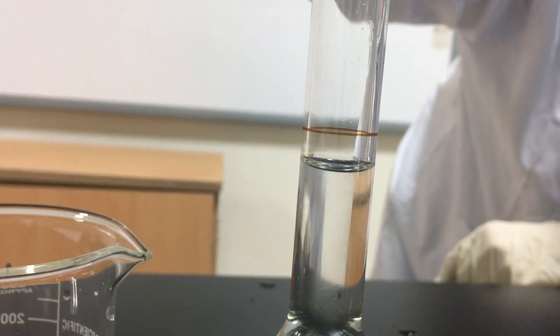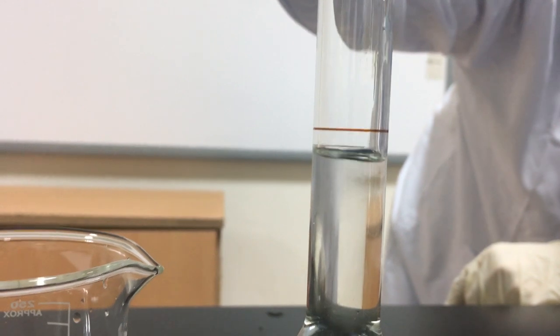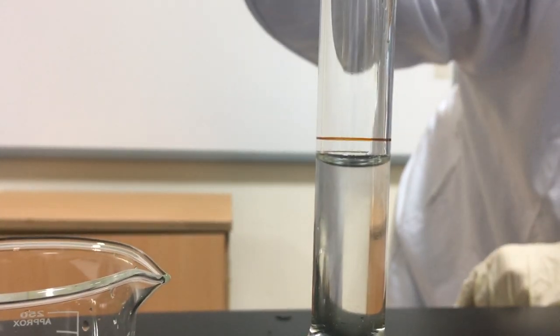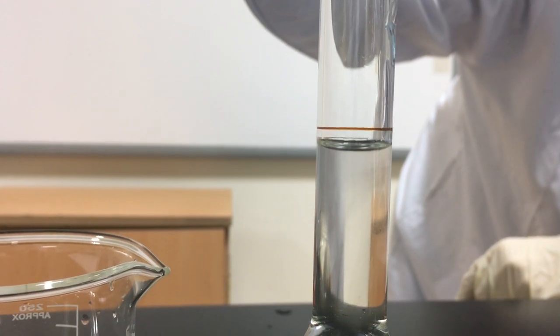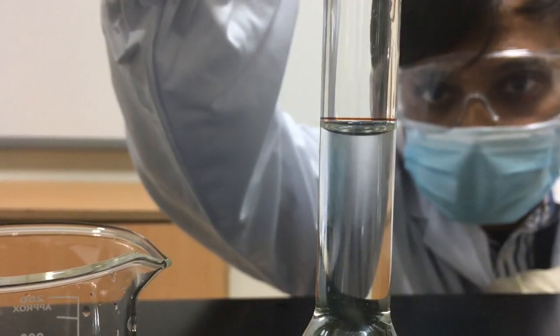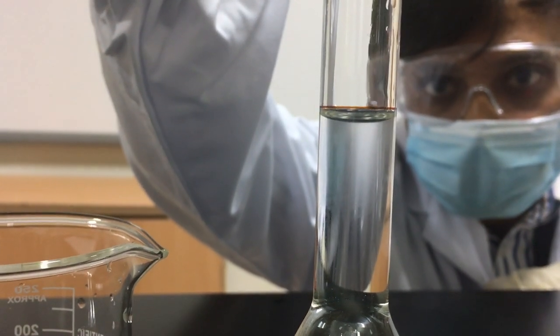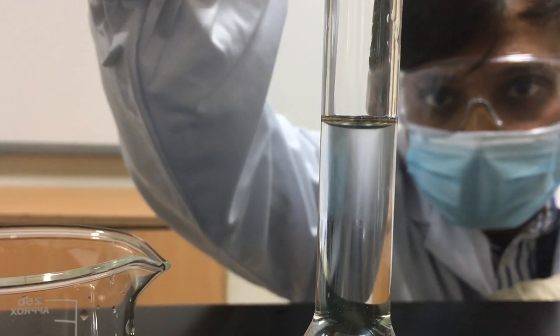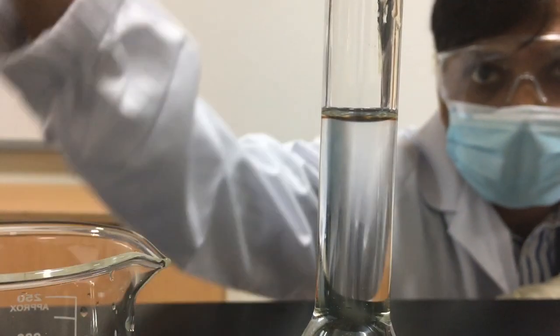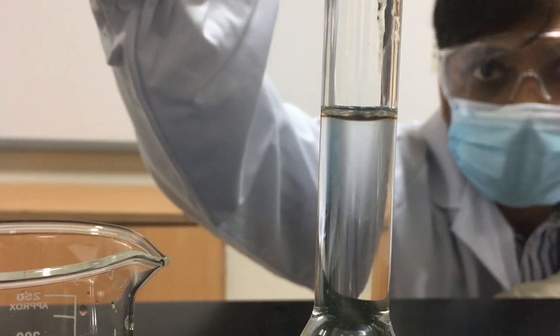Use a medicine dropper to add water slowly until the bottom of the meniscus reaches the calibration mark. Pay attention, one drop will change the volume.